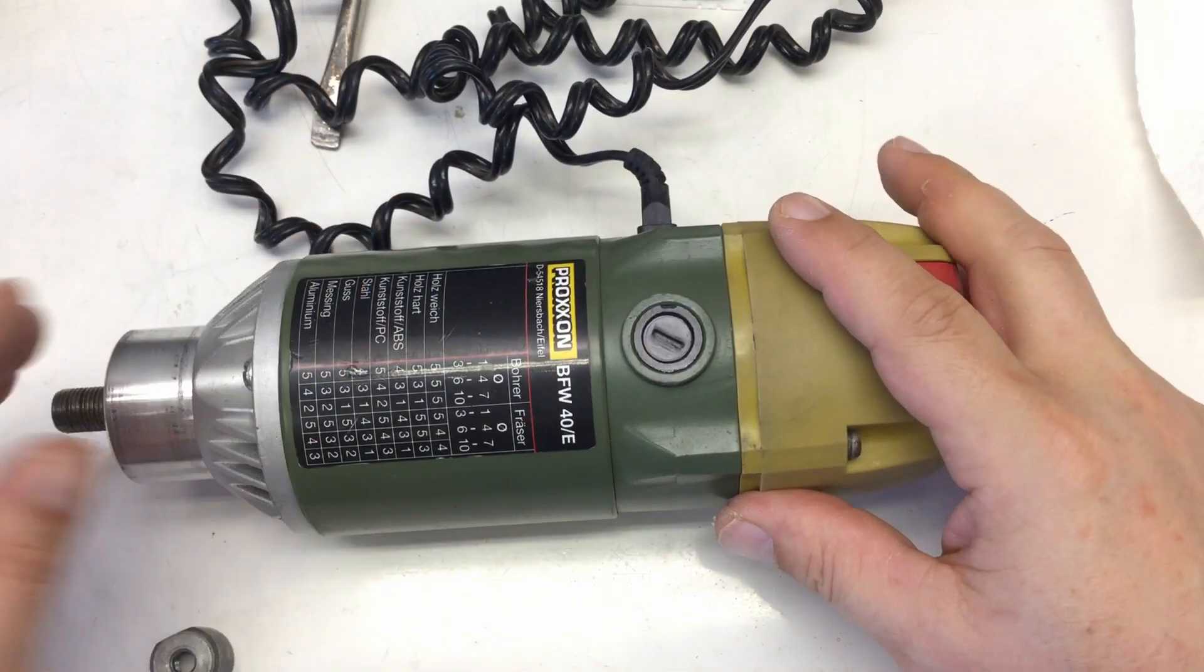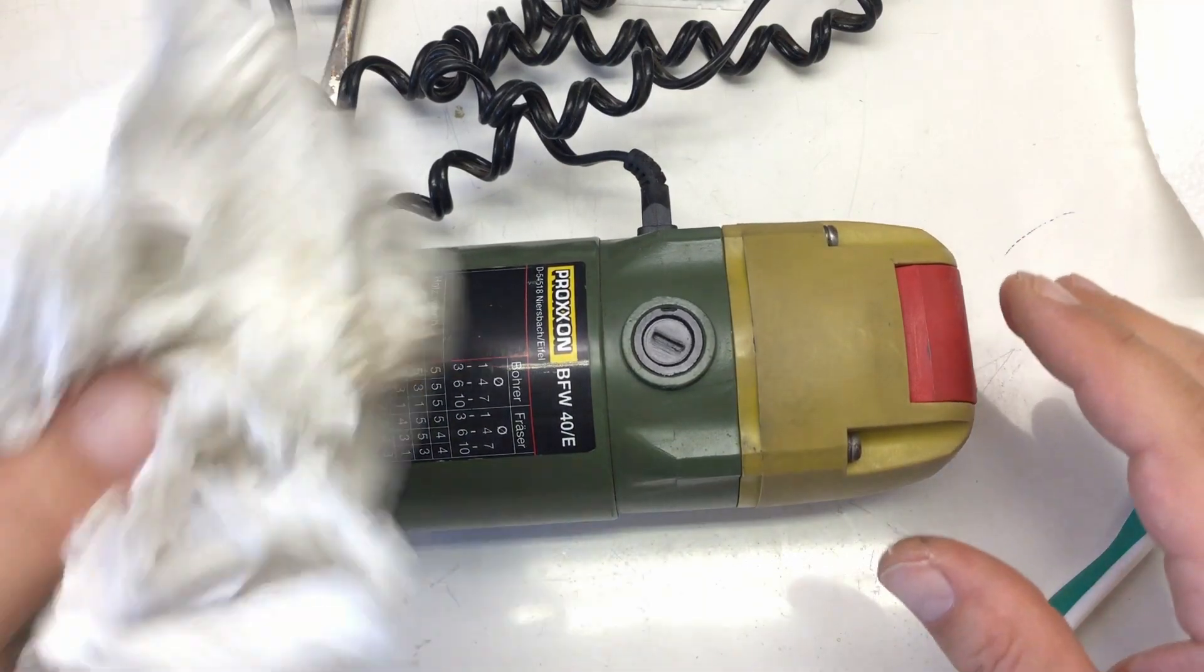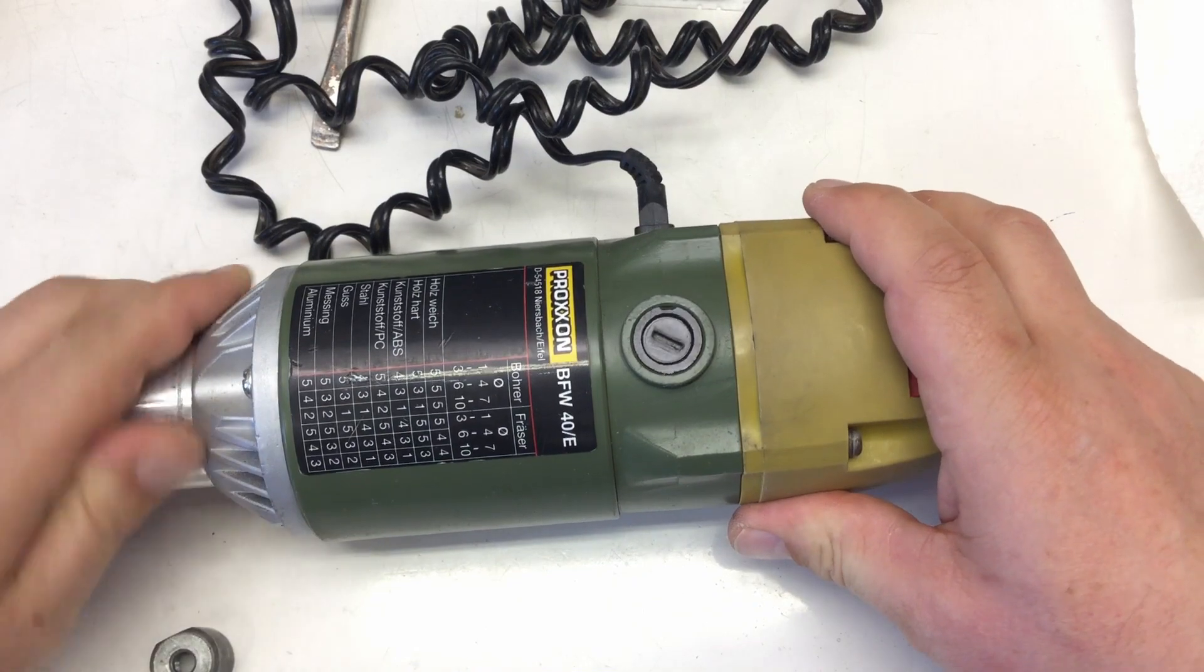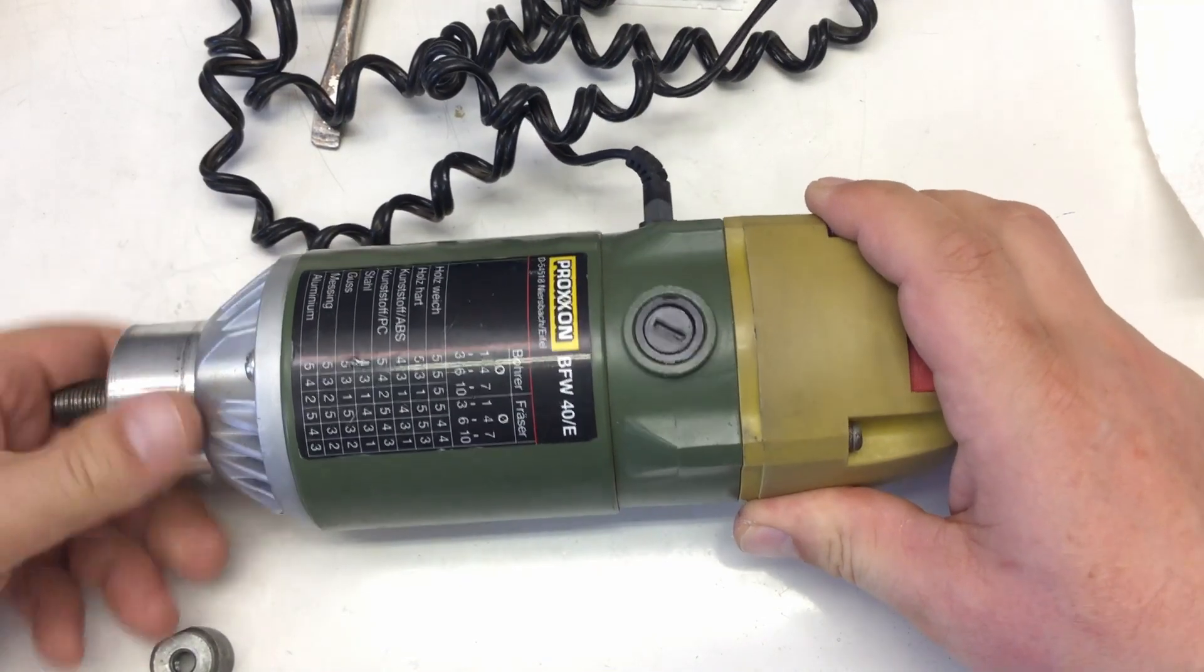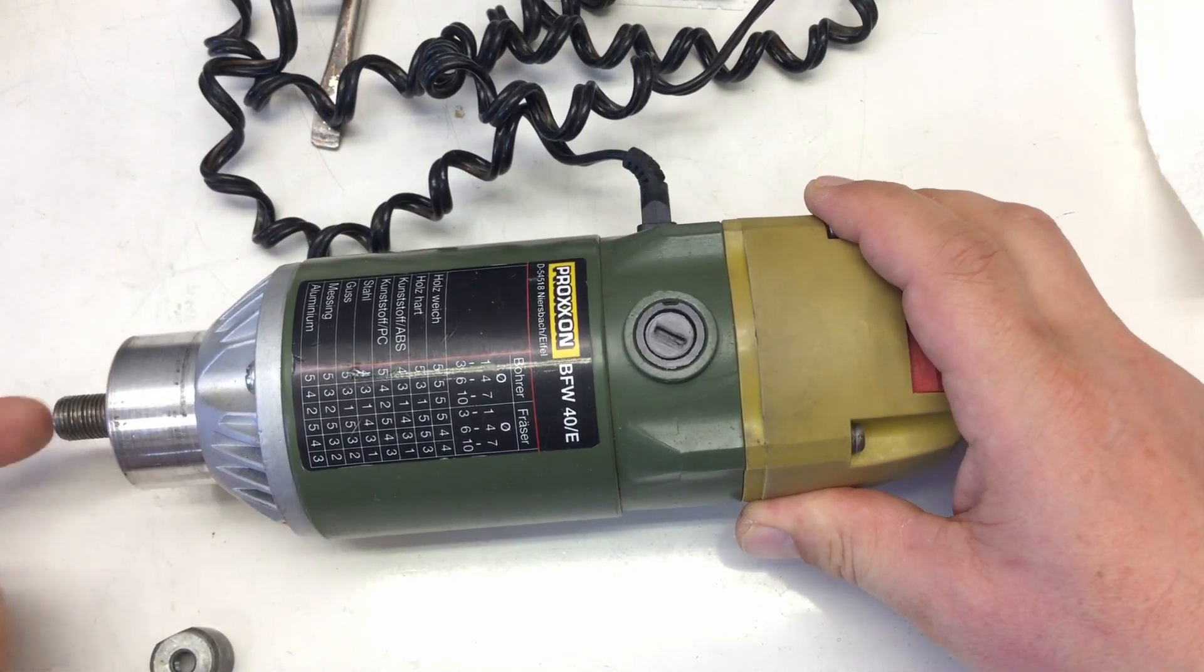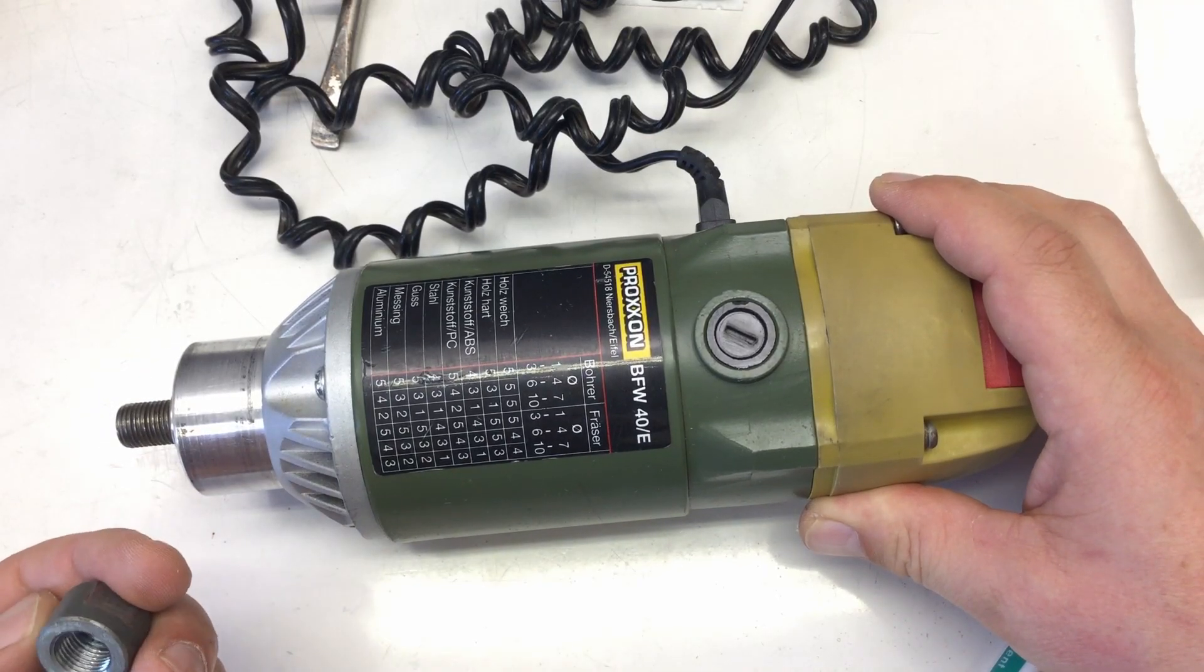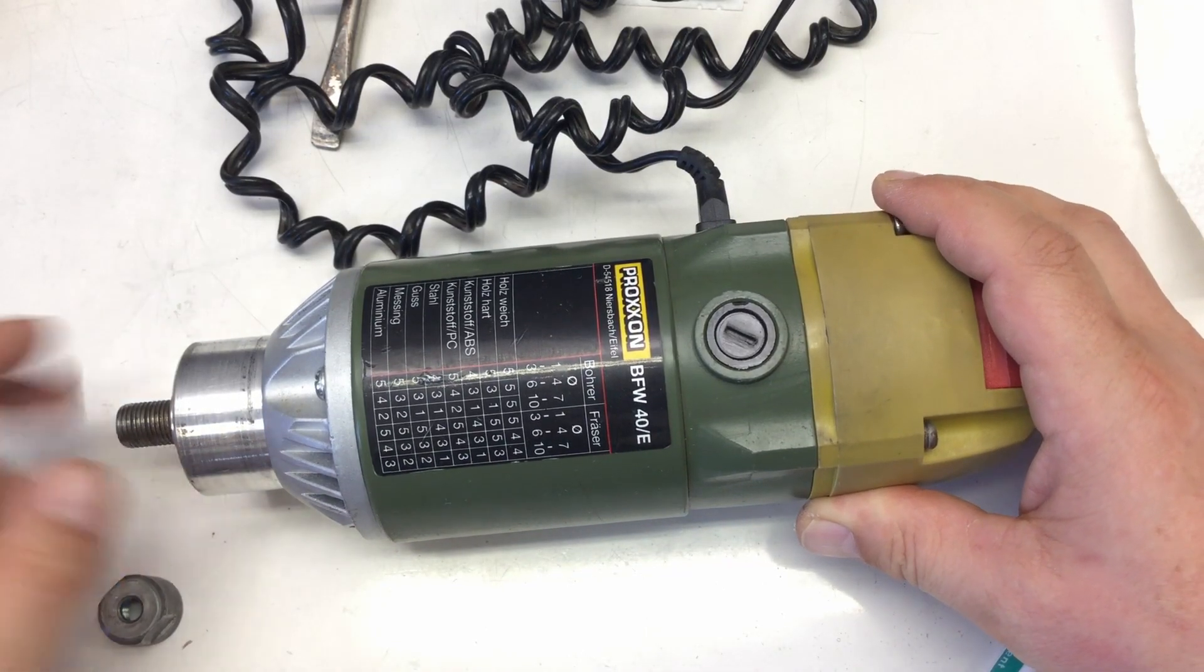That was easy enough to clean. I just vacuumed it and then wiped everything down with a little bit of alcohol. Absolutely no problems. Everything is smooth. There's a slight problem with the collet here. The collet nut itself is perfect but yeah we'll see in a second.